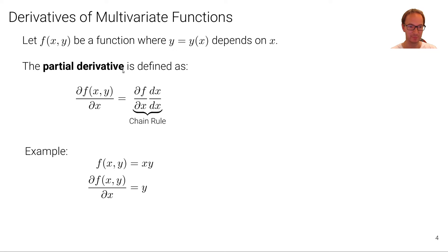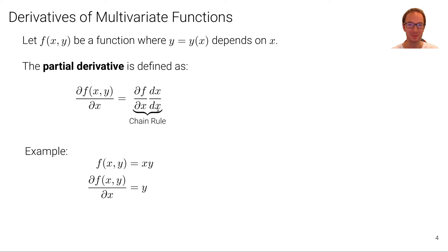The partial derivative of f with arguments x and y with respect to x is denoted with the partial symbol, and it's simply the partial derivative of f with respect to x times dx/dx, which is 1 — just the chain rule written explicitly. In other words, in computing the partial derivative, we don't consider that y is a function of x; we treat y as a constant. For example, with f(x, y) = xy, the partial derivative with respect to x is simply y.